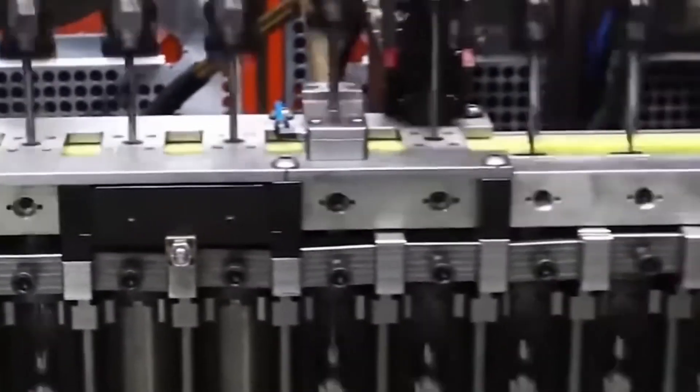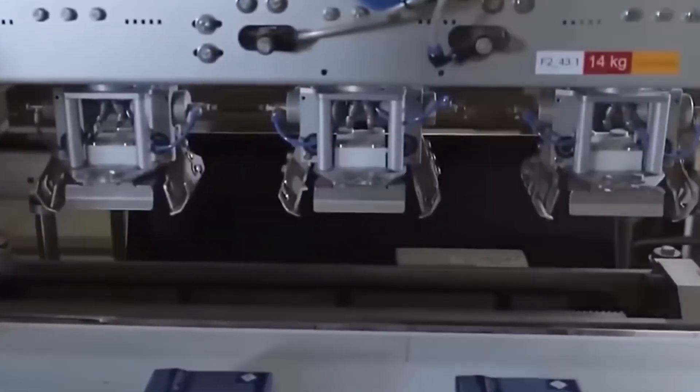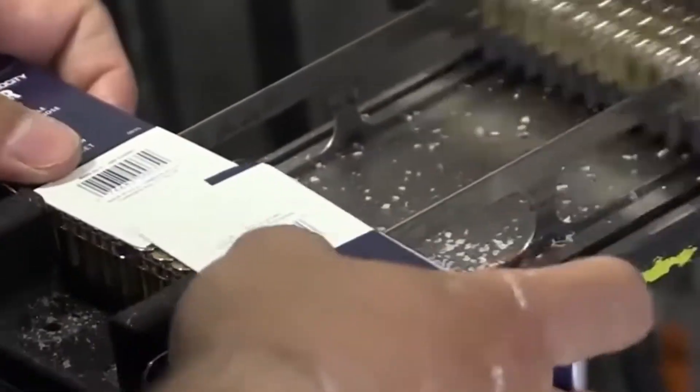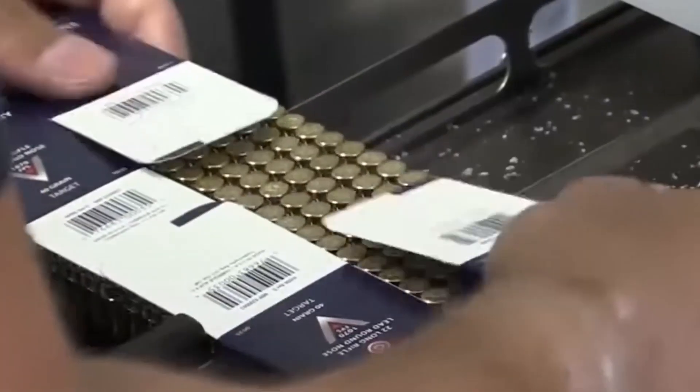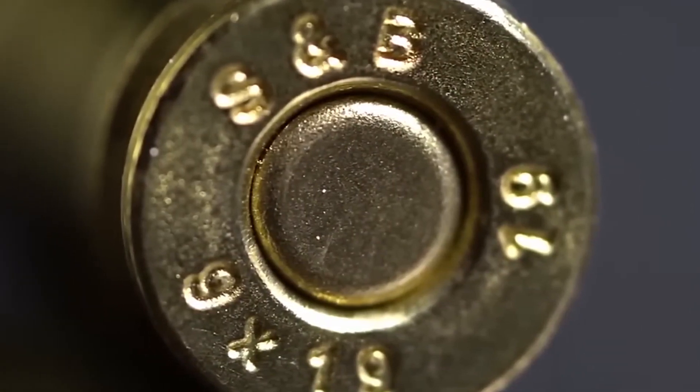While military ammunition might be loaded onto stripper clips or belts, then packed in bandoliers or ammunition cans. Each package receives lot numbers for tracking purposes, allowing any issues to be traced back to specific production runs.